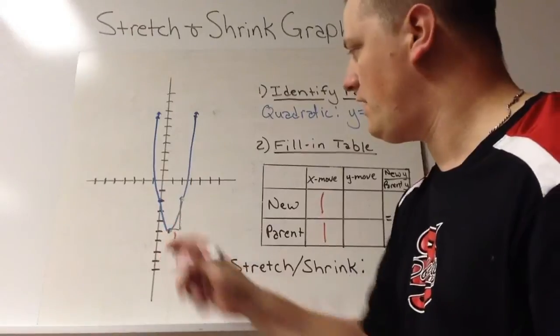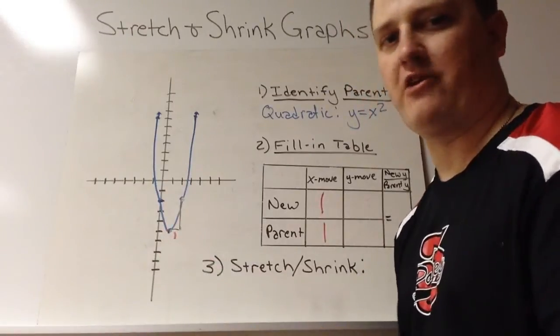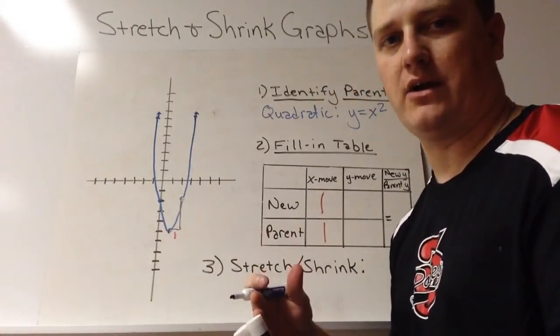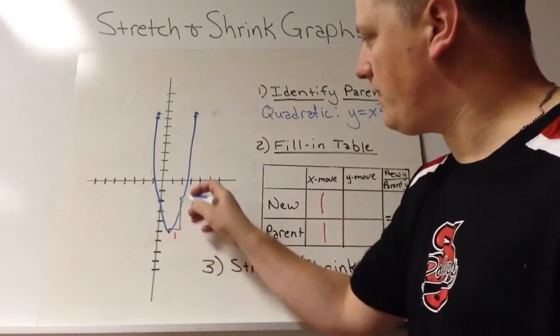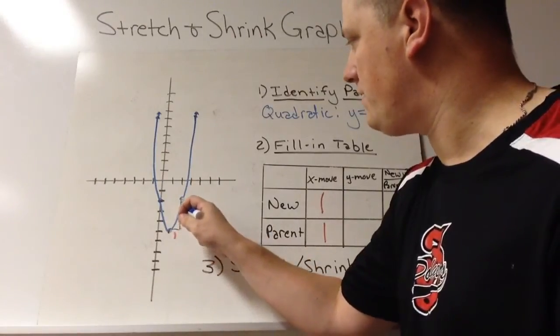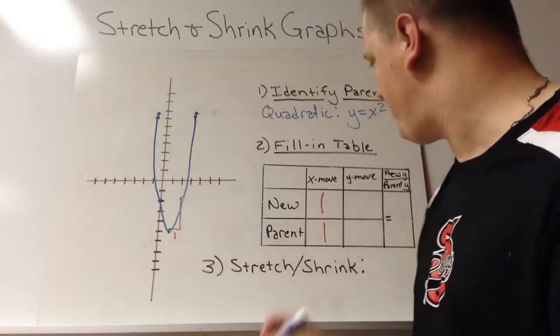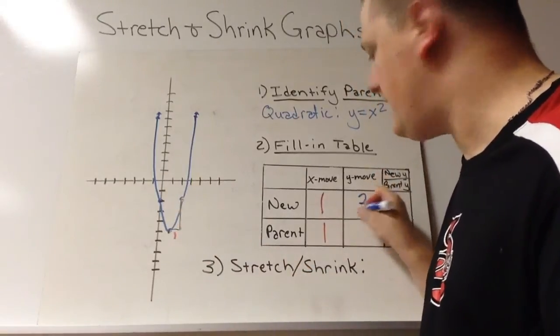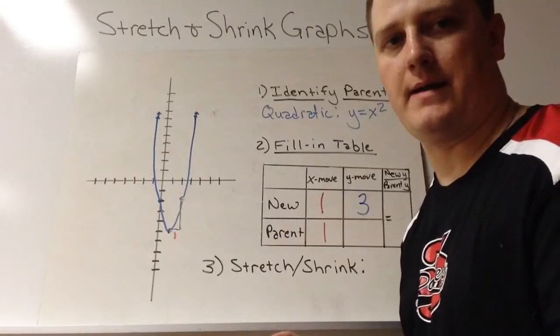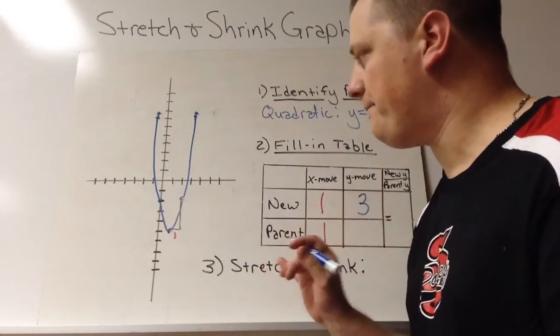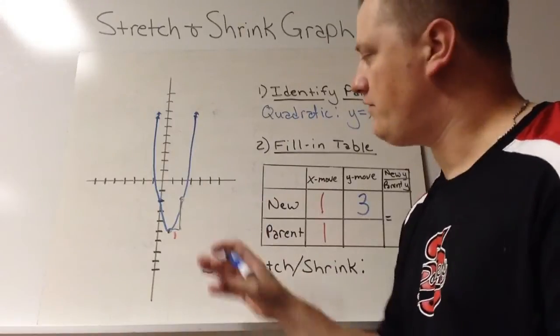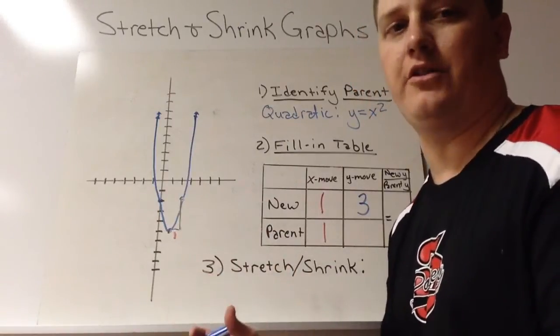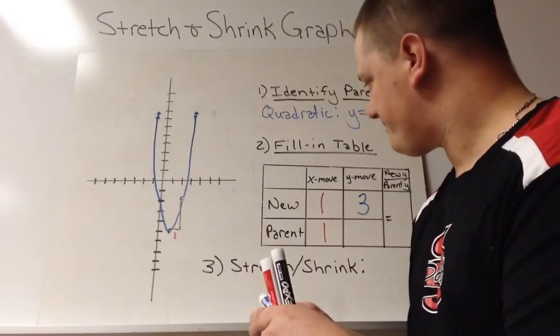Then we need to know the y move, which is how far up or down do I have to go. Now I don't care negatives or positives. I just care the distance. So here we're going up and we have to go 1, 2, 3. We have to go up 3. So this is going to be a 3 here. It doesn't matter if it's up or down. It's just how far. So if I go down 3, that's still 3.